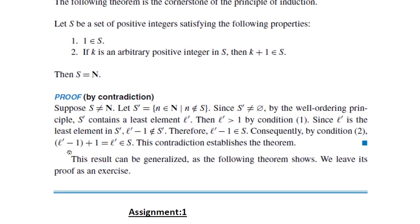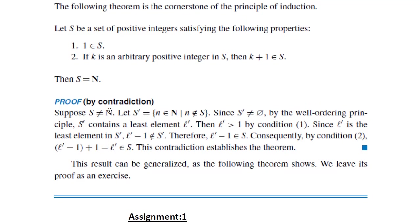Proof: We use the contradictory approach. Suppose S is not equal to ℕ. Let S' (S complement) be the set of natural numbers not in S. Since the ground universal set is ℕ, the complement S' consists of all natural numbers which are not in S. Since S ≠ ℕ, S' is non-empty.